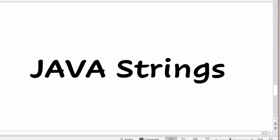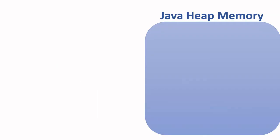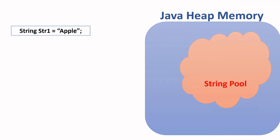Now let's take a closer look at the process of creating strings. In the Java heap memory, we have a string pool in which all strings that are created will be placed. For example, the line of code 'String str1 = "apple"' is trying to create a string variable called str1 and assign the value apple to it. The JVM will check if the value apple is in the pool, and if it is not, it will add that string value to the pool and return a reference called str1 that points at this string value.